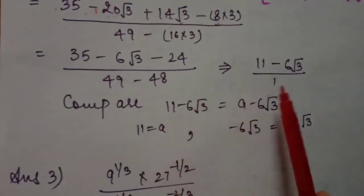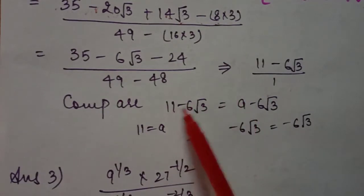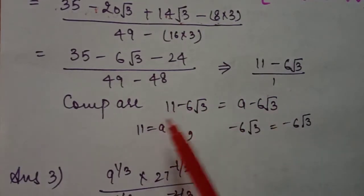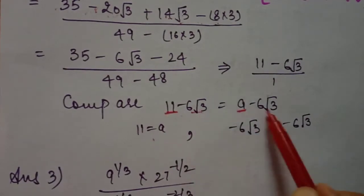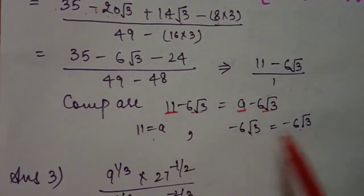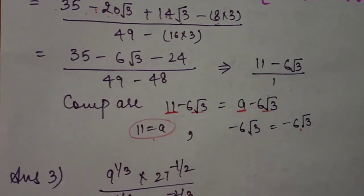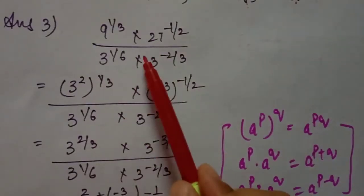Comparing the result 11 minus 6 root 3 with the given expression a minus 6 root c, the first term matches the first term and the second term matches with sign. So the value of a is 11.